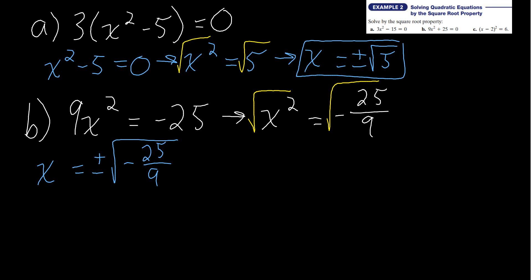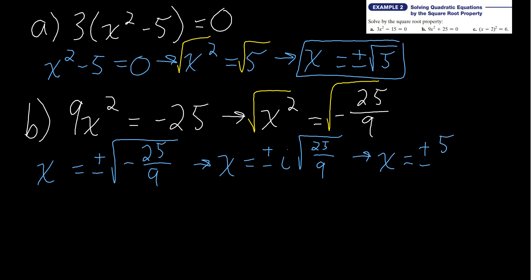The square root of a fraction means we take the square root of the top and the square root of the bottom. Lucky for us, both 25 and 9 are perfect squares. We see a negative inside the radical, so we account for i — imaginary number. So x equals plus or minus the square root of 25 over 9 with an i, which gives x equals plus or minus 5i over 3.